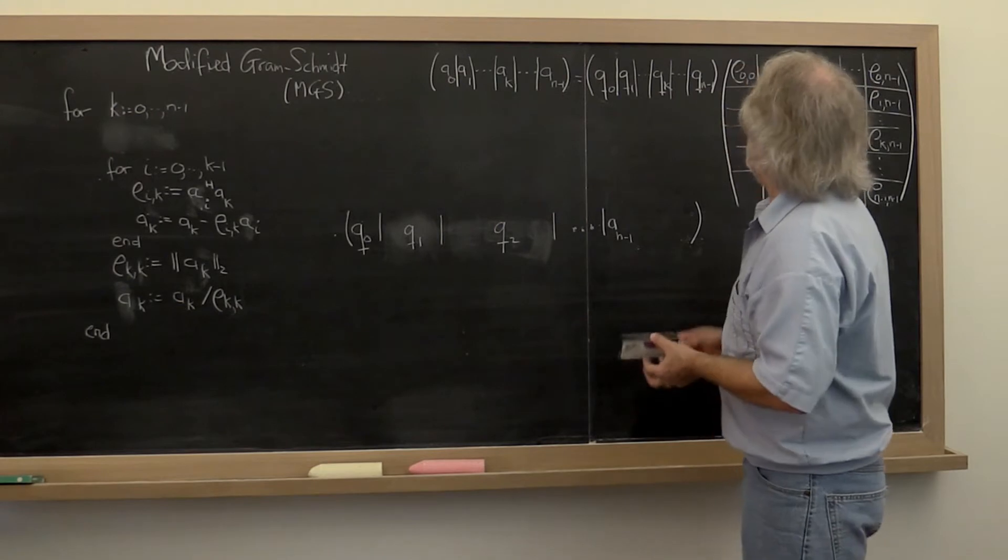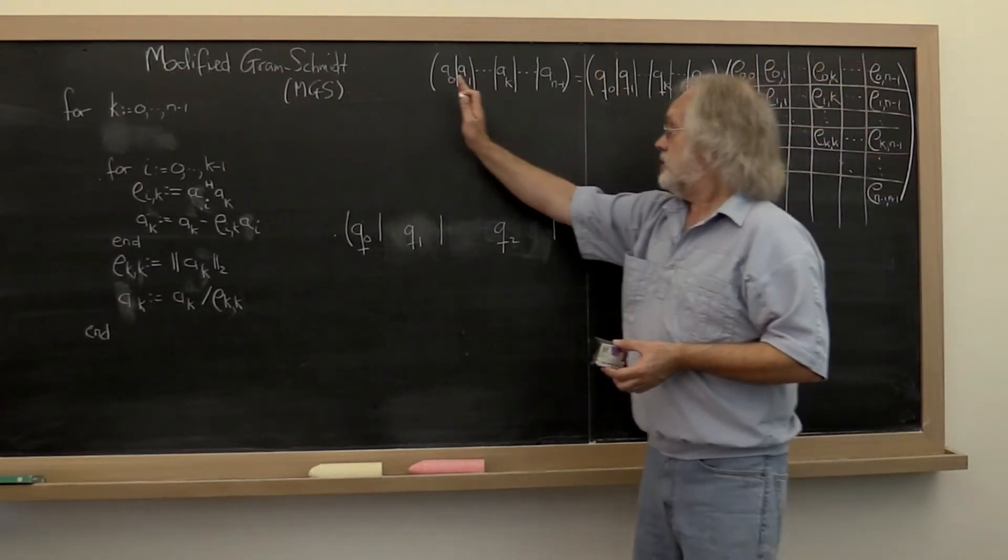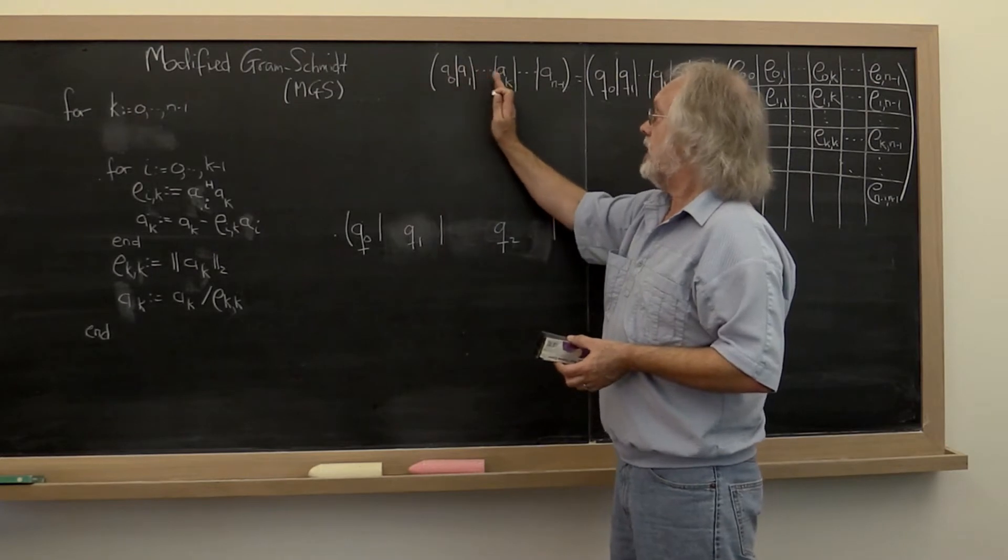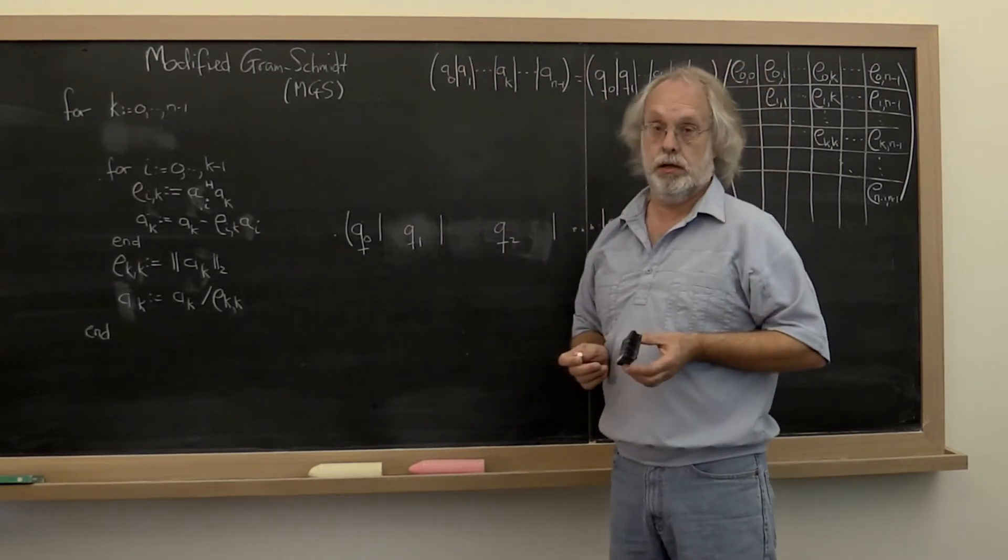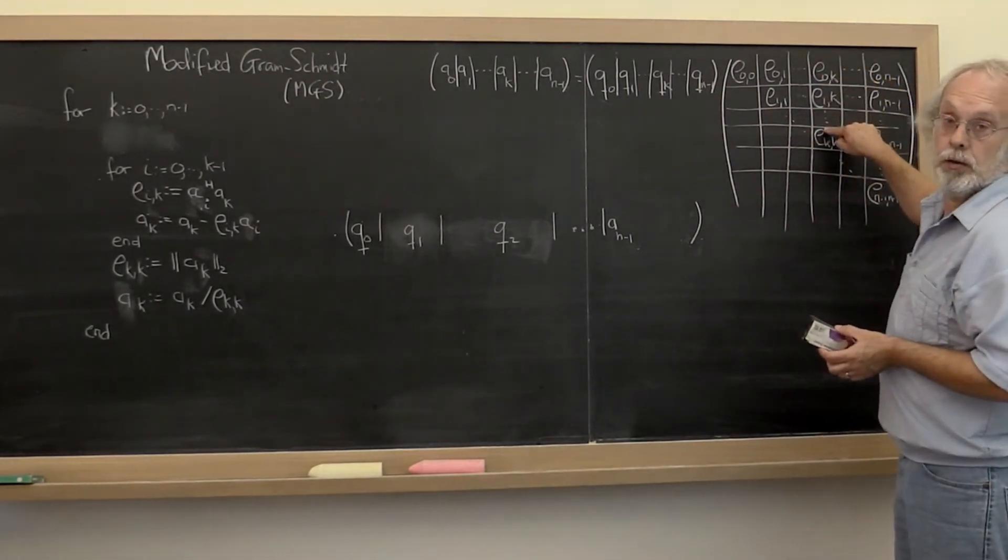Now what this method does is it still computes and updates A one column at a time, leaving all of the other columns alone, and it computes R one column at a time.